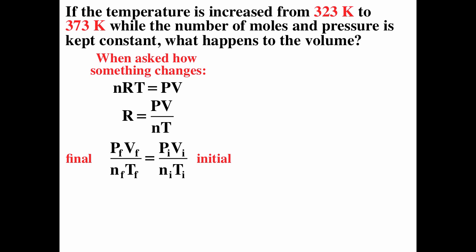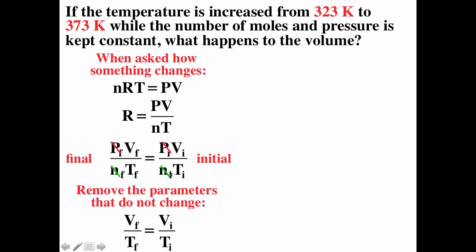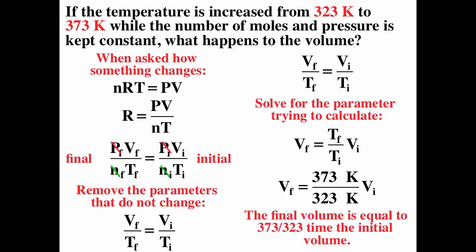Starting with the general equation, with number of moles and pressure constant, we eliminate N and P to get V_final/T_final = V_initial/T_initial. Multiplying both sides by T_final, we get V_final = (T_final/T_initial) × V_initial. If we increase the temperature at constant pressure, the volume increases, and V_final = (373/323) × V_initial.